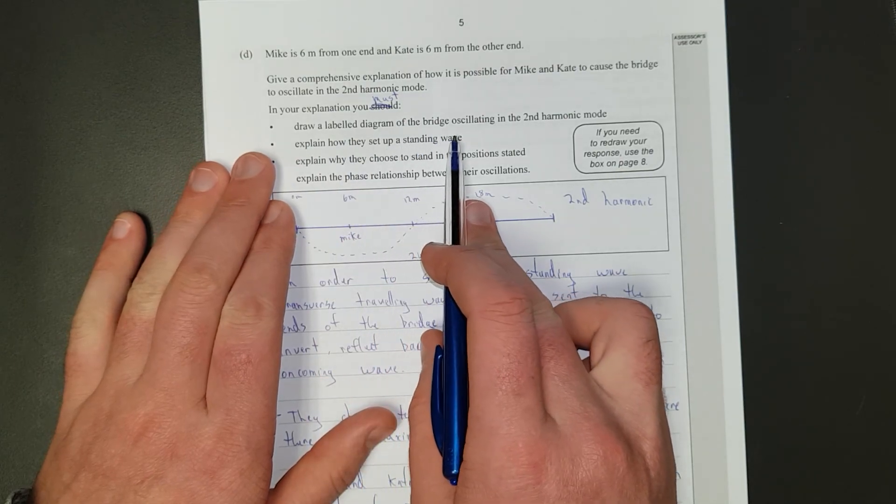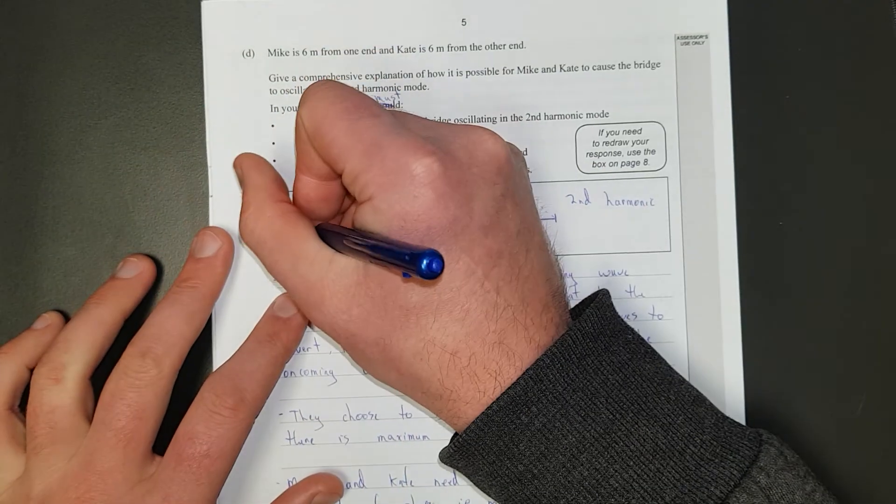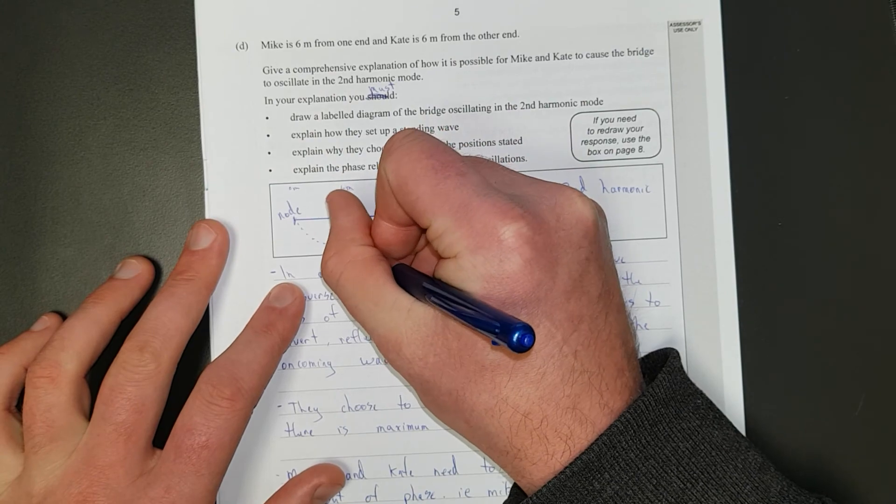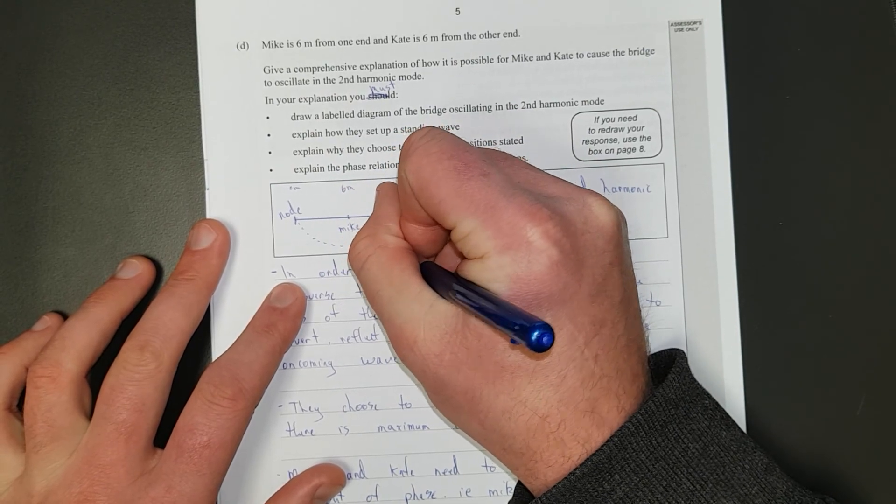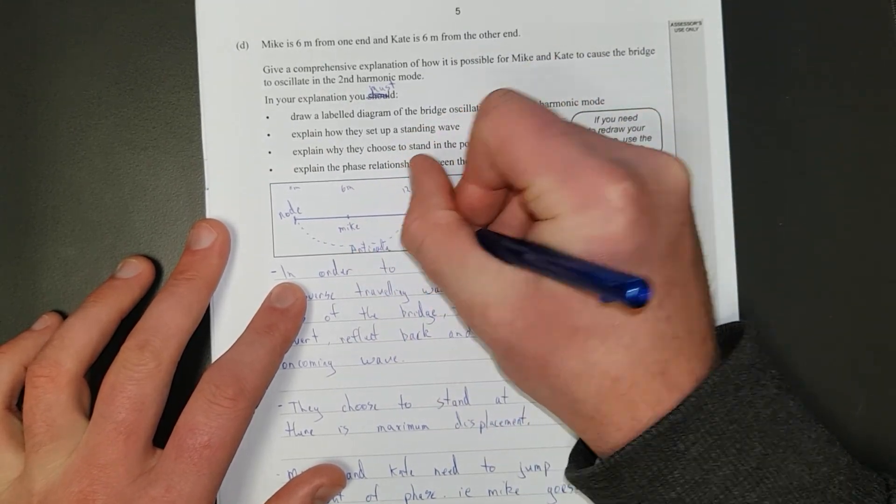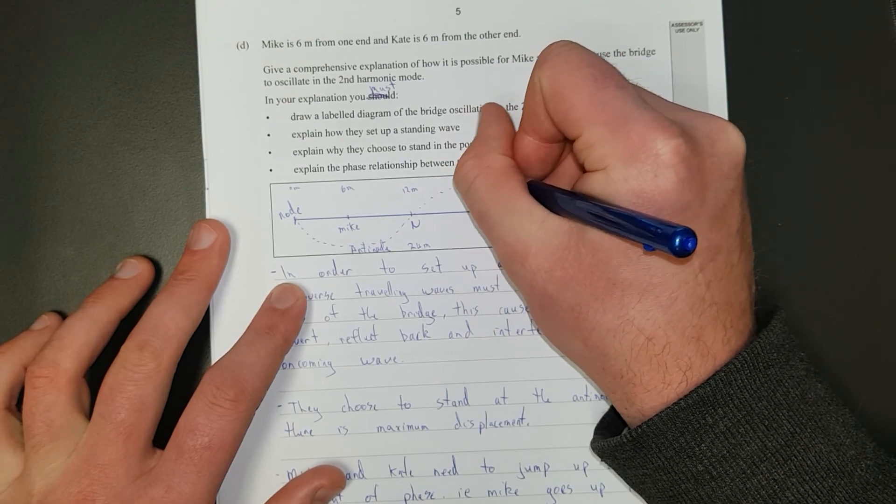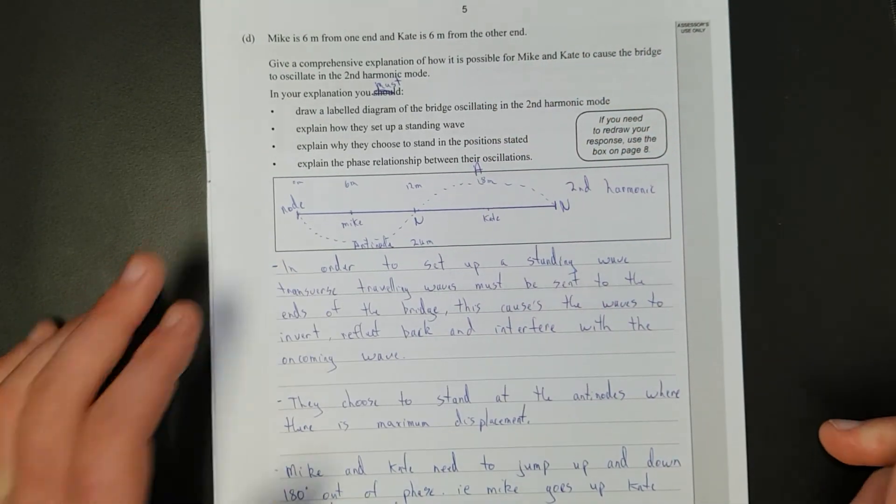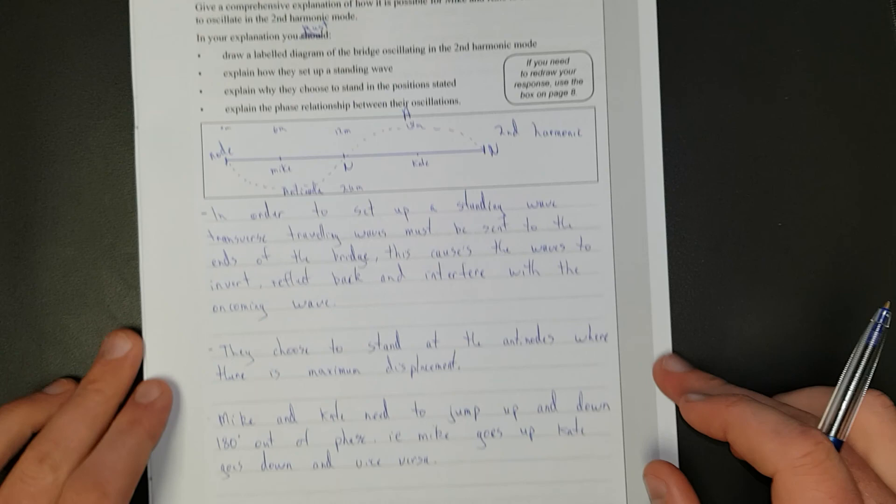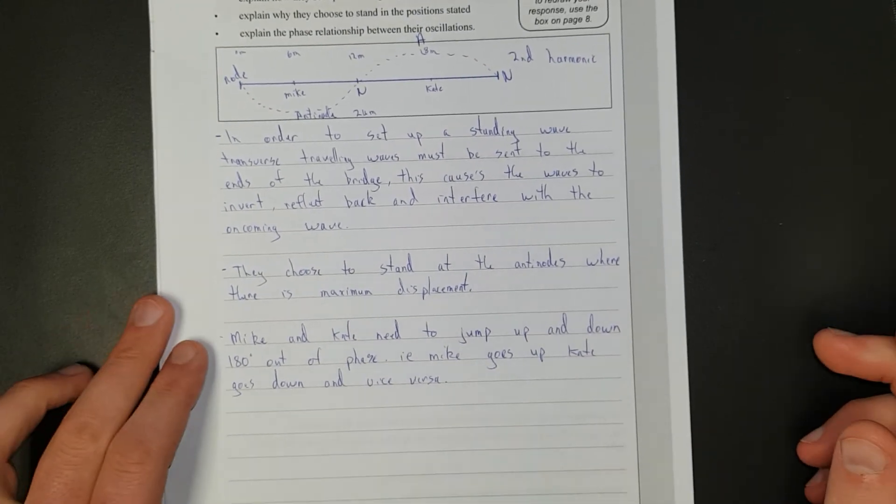We'll just check we've done everything. Draw a label diagram. No, we haven't done a label. So that's a node. That's an anti-node. I'll just put N, A, N. It should be labeled fully. And that's it.